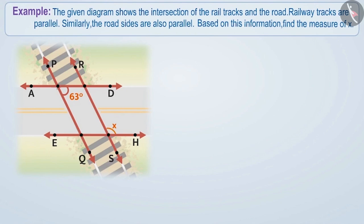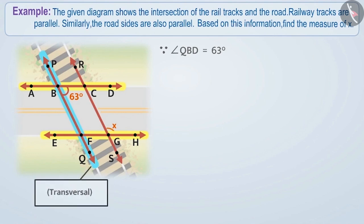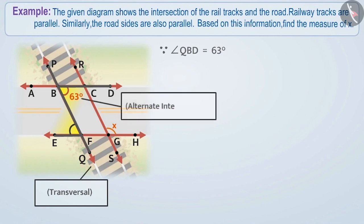Similarly, we will also name the points formed at the intersection. Here we are given that angle QBD is equal to 63 degrees. We see that line AD and line EH are parallel and line PQ is their transversal line. Angle QBD and angle PFE are alternate interior angles formed by the transversal of two parallel lines, so they are equal. That is, angle QBD is equal to angle PFE is equal to 63 degrees.